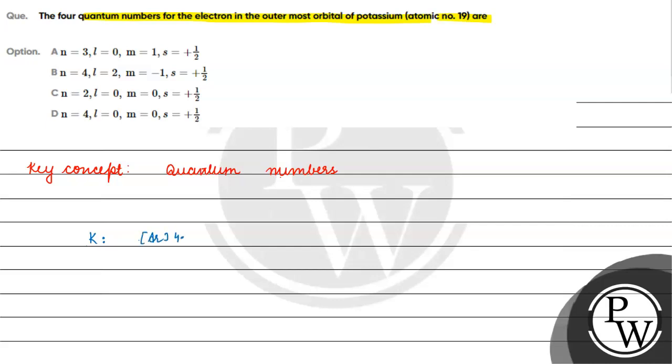The electronic configuration is Argon 4s1 for the outermost orbital. Now we can determine the quantum numbers.